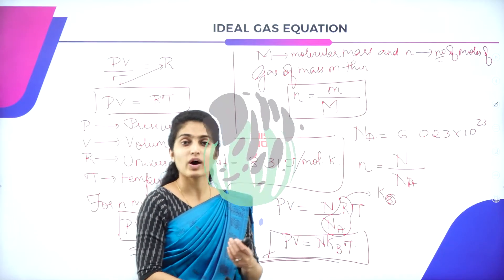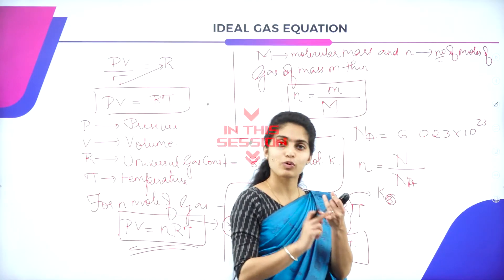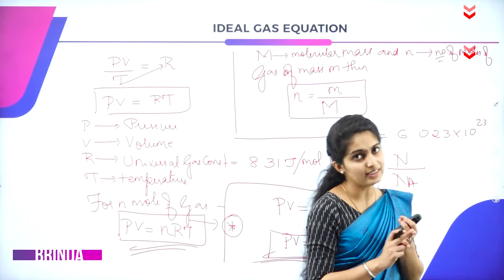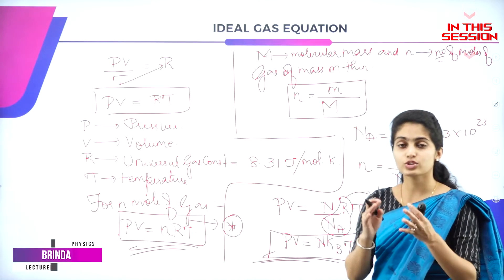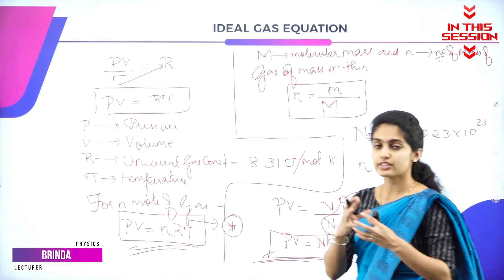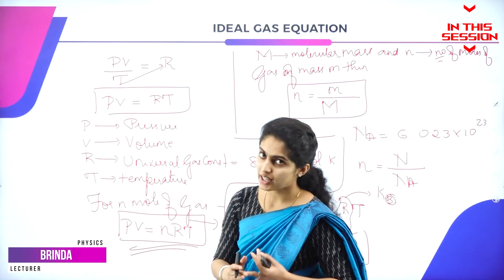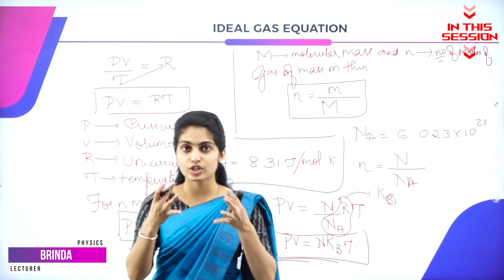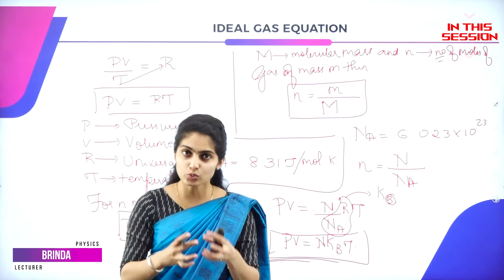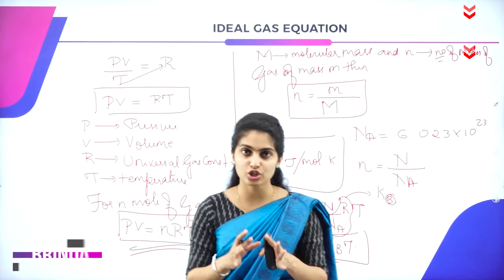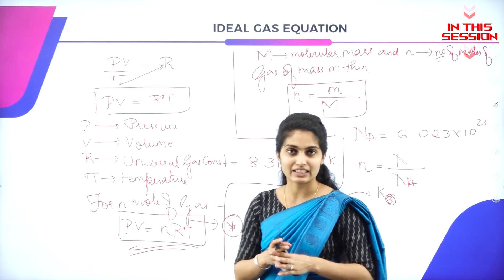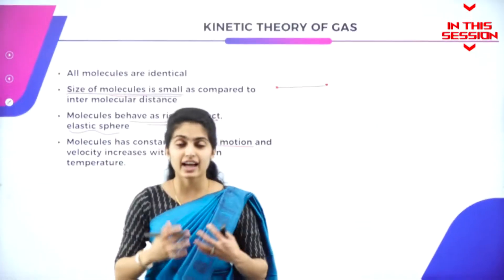The ideal gas equation is the one which obeys Boyle's law as well as Charles' law. First consider Boyle's law equation, then Charles' law equation — merge the two sets of equations and you will get the ideal gas equation.